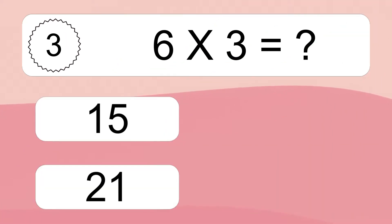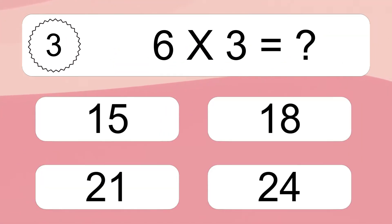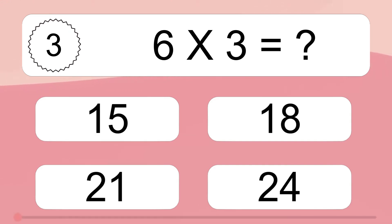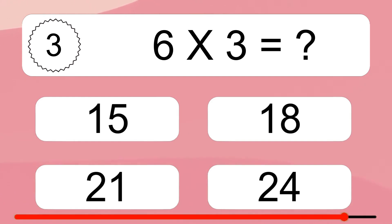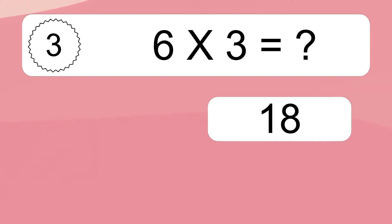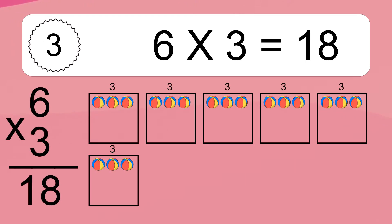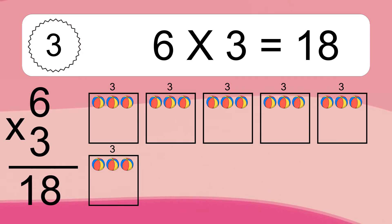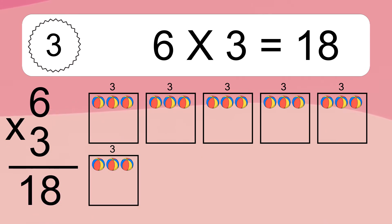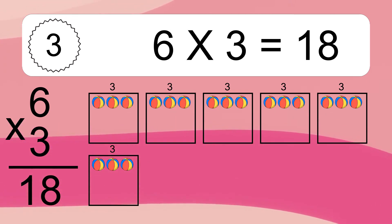6 times 3 equals what? 6 times 3 equals 18. We have 6 boxes, and each box has 3 colorful balls inside. If you count all the balls in all the boxes together, you will have 6 times 3 balls. This equals 18 balls.